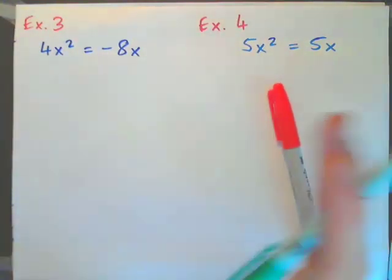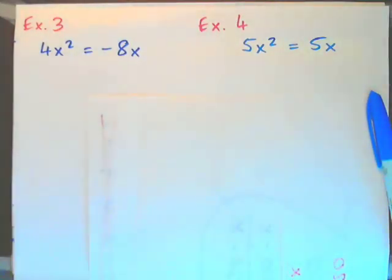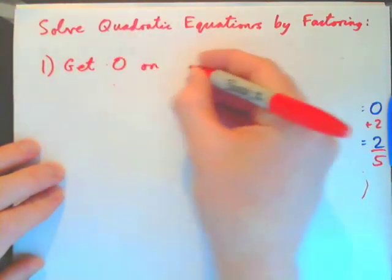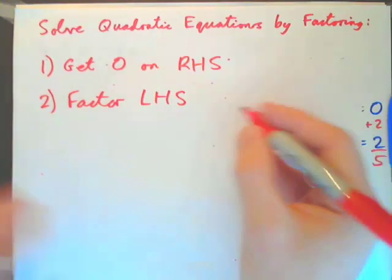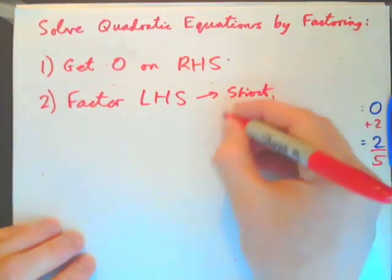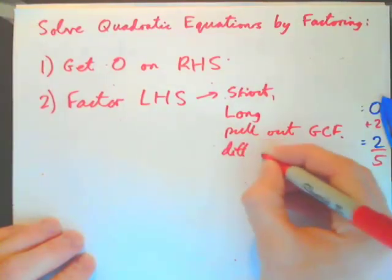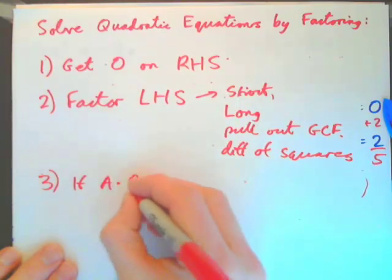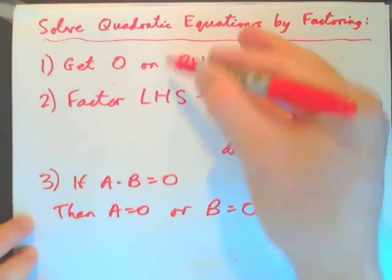So for all of these, we have the same three steps. To solve quadratic equations by factoring: first, get 0 on the right-hand side. Second, factor the left-hand side using whichever method applies — short, long, pull out greatest common factor, or difference of squares. Third, use the zero product rule: if A times B equals 0, then A equals 0 or B equals 0.